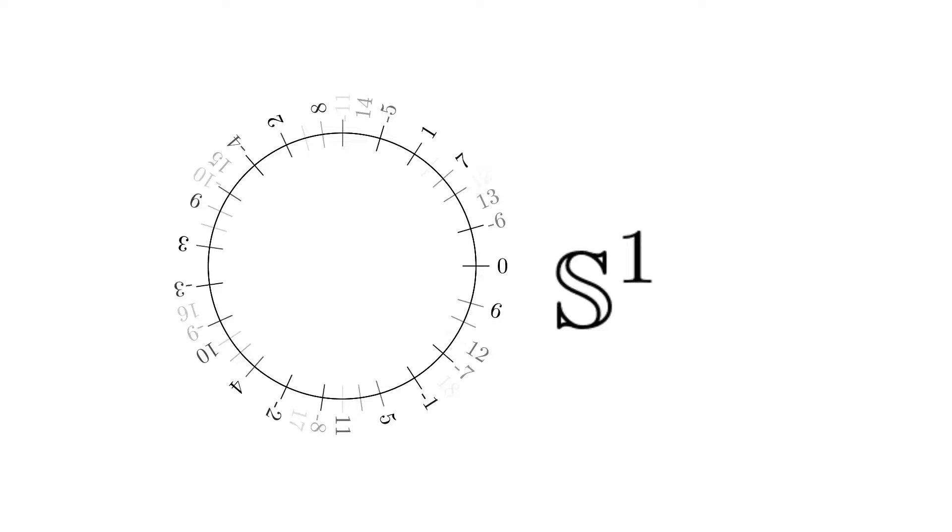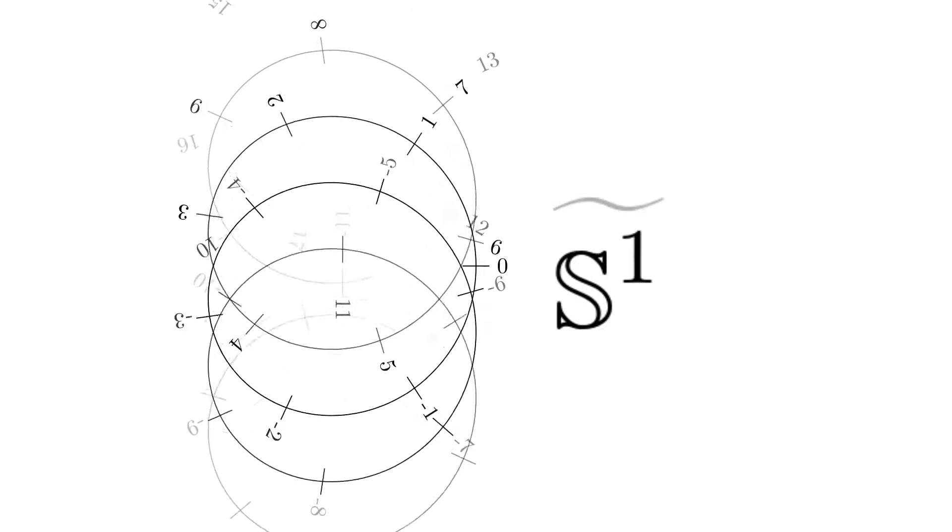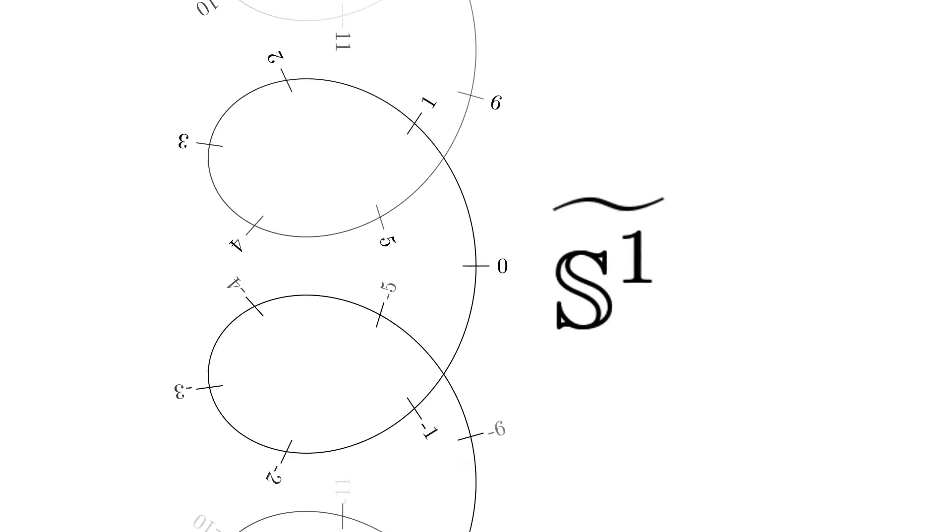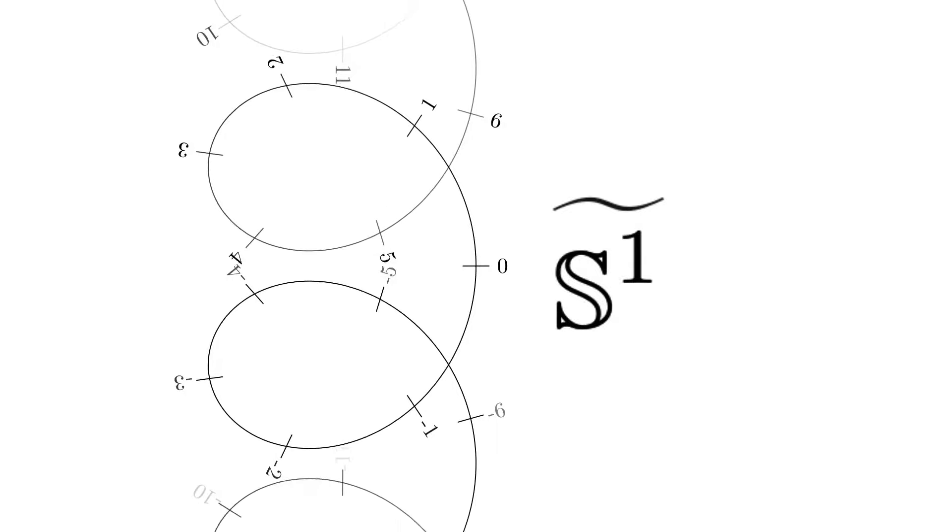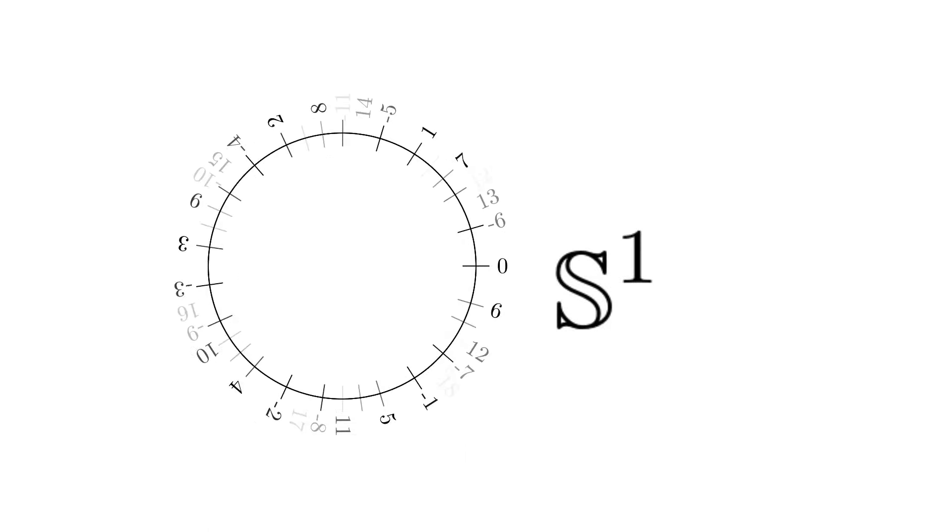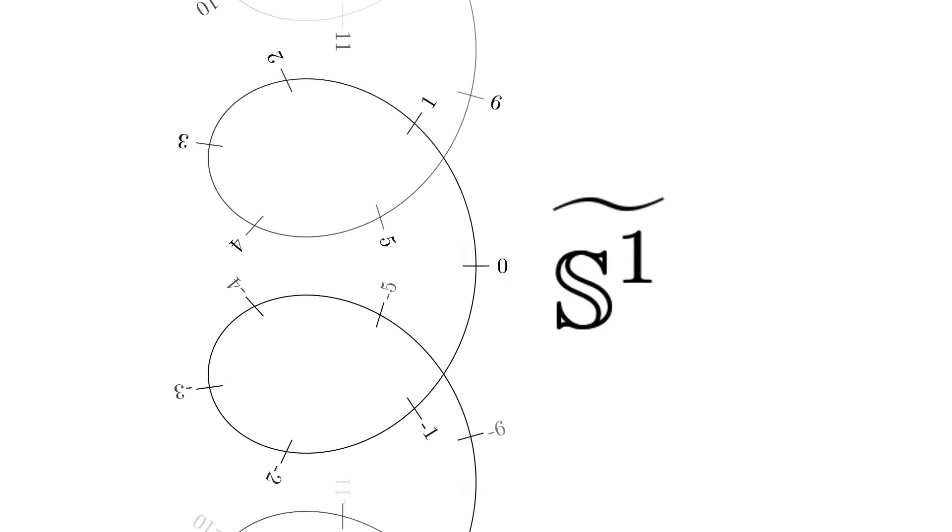Now, we need to explain the concept of the universal cover. Look at this circle. It can be seen as a wrapped line. The circle can be obtained from the line by gluing some points. We say that the line is the covering space of the circle. The universal cover is the largest possible covering space, in which all the possible loops are unwrapped.